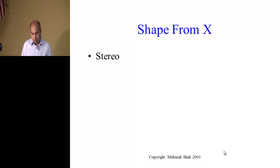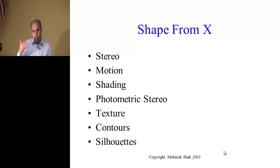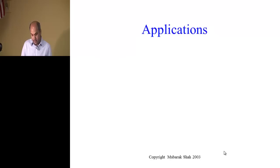Stereo is one method, which we're going to talk about tomorrow, and motion is what we're going to talk about today. Then there's shading and photometric stereo, texture, contours, silhouettes — lots of different ways to recover 3D from 2D images. That's what humans do too, because our vision system also projects 3D to 2D. The retina is like an image plane — we get 2D but are able to recover 3D and navigate in the 3D world.